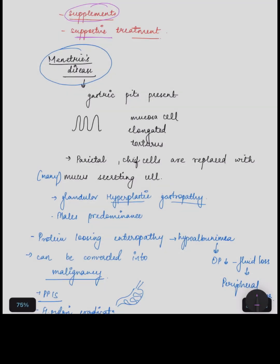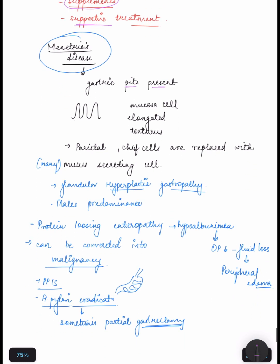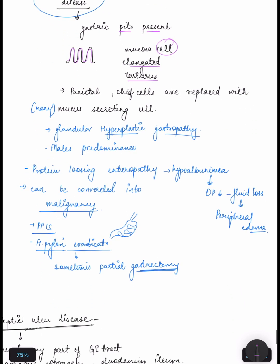Next we are going to study Menetrier's disease. In this disease, gastric pits are formed in the gastric mucosal layer because cells are elongated and tortuous. In this case, parietal and chief cells are replaced with mucous secreting cells. It is also called gastric glandular hyperplastic gastropathy, and it is male predominant.